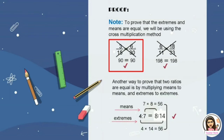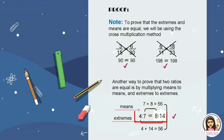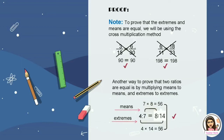For example, 3 over 15 equals 6 over 30. Cross multiplying: 3 multiplied by 30 equals 90, and 15 multiplied by 6 equals 90. Another example: 6 over 11 equals 18 over 33. 6 multiplied by 33 equals 198, and 11 multiplied by 18 equals 198. Another way to prove two ratios are equal is by multiplying means to means and extremes to extremes. The means are the internal values 7 and 8: 7 multiplied by 8 equals 56. The extremes are the outer values 4 and 14: 4 multiplied by 14 equals 56. The products are the same, therefore it is a proportion.